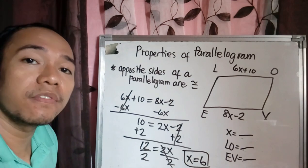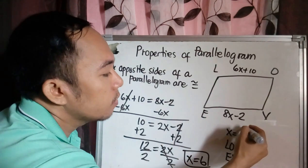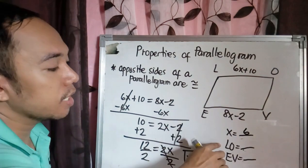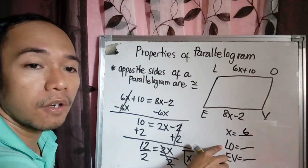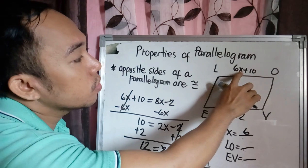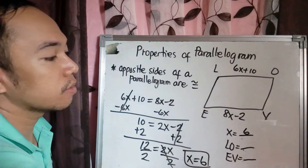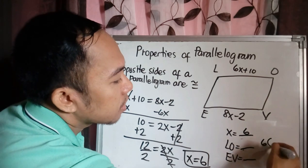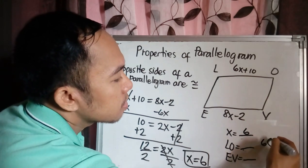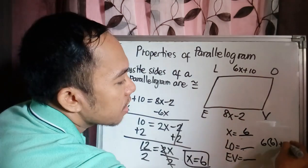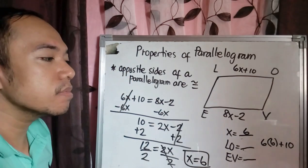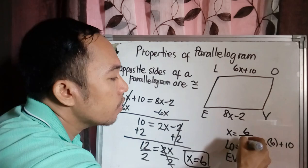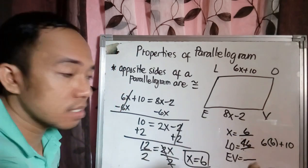After solving for X, we can now get the measurement of LO. How? By substituting your value of X here. So you have 6 times 6 plus 10. 6 times 6 plus 10 is 36 plus 10, which is 46. So our LO is 46 units.